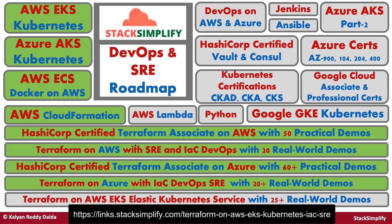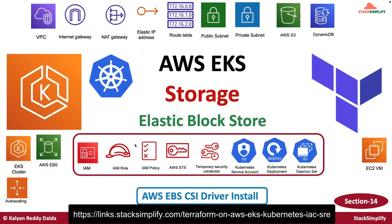Welcome back. In this section, we are going to focus on the AWS service named Elastic Block Store, or EBS. For our EKS cluster, the applications running in it need persistent storage. For persistent storage in AWS EKS, we can use EBS. And for managing these EBS volumes from an EKS cluster, we need something called the EBS CSI driver. Let us understand that on a high level.